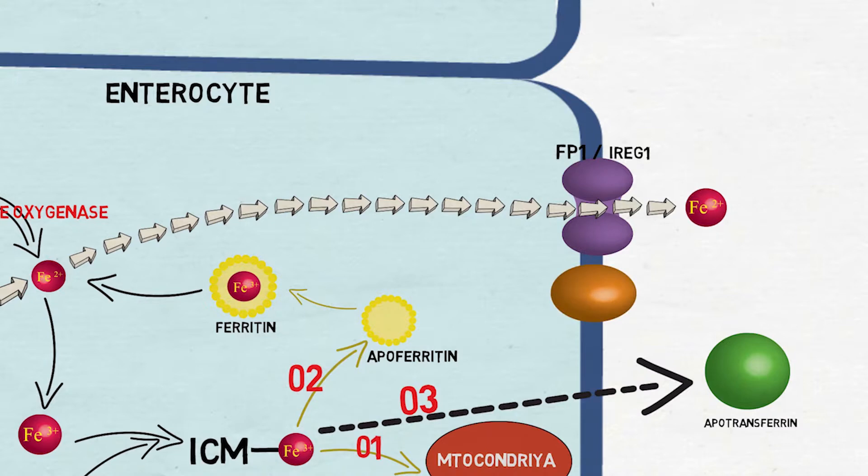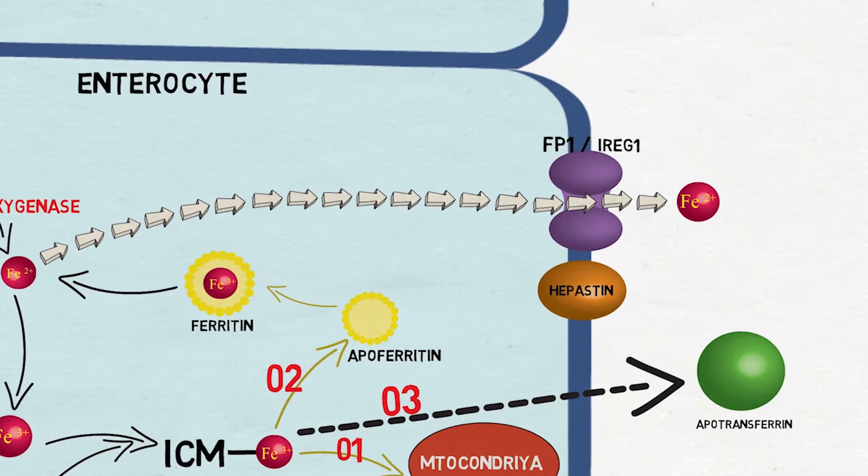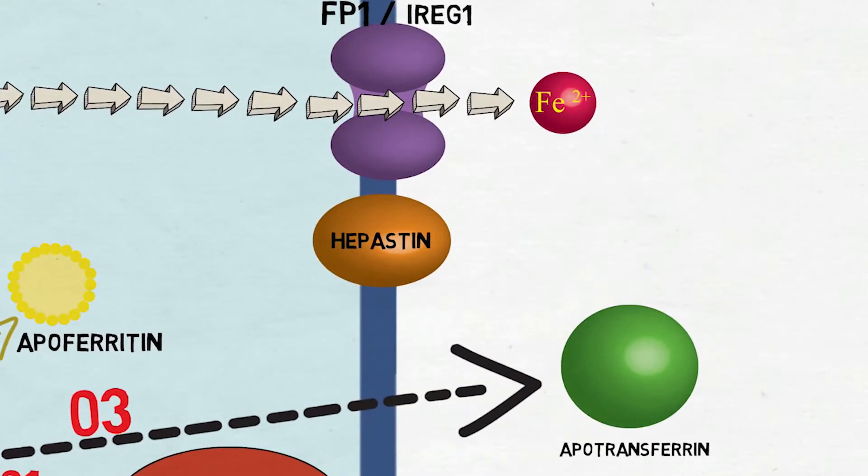This protein may interact with the copper-containing protein hephaestin. It helps the action of ferroportin and it is a protein similar to another protein called ceruloplasmin. It is important to know hephaestin has a ferroxidase activity which is important in the conversion of Fe2+ to Fe3+ again.